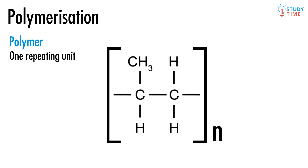Often NCEA questions will ask you to draw a number of repeating units based on a monomer they give you. Simply think of it as opening up the double bond and placing spare bonds on either side of the unit instead.